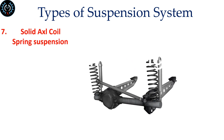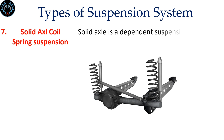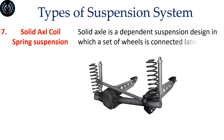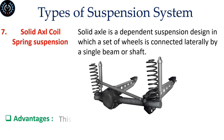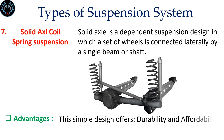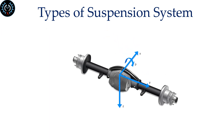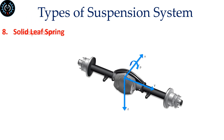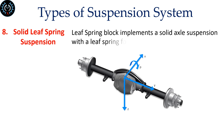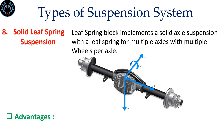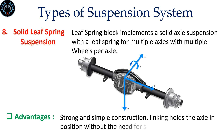Solid Axle Coil Spring Suspension is a dependent suspension design in which a set of wheels is connected laterally by a single beam or shaft. This simple design offers durability, affordability, and less weight. Solid Leaf Spring Suspension implements a solid axle suspension with a leaf spring across multiple axles, featuring strong and simple construction where the spring links hold the axle in position without the need for separate linkage.